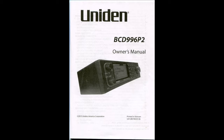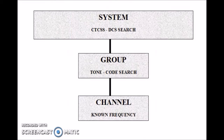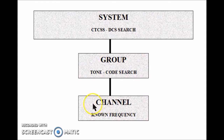The method I've used to locate the missing CTCSS or DCS tone or codes is by building a standard system and allowing the scanner to do the search for me. I've got a system called CTCSS DCS Search, the required group is called Tone Code Search, and finally the channel where I put in the frequency that I'm knowledgeable of but don't know what the tone or code is.